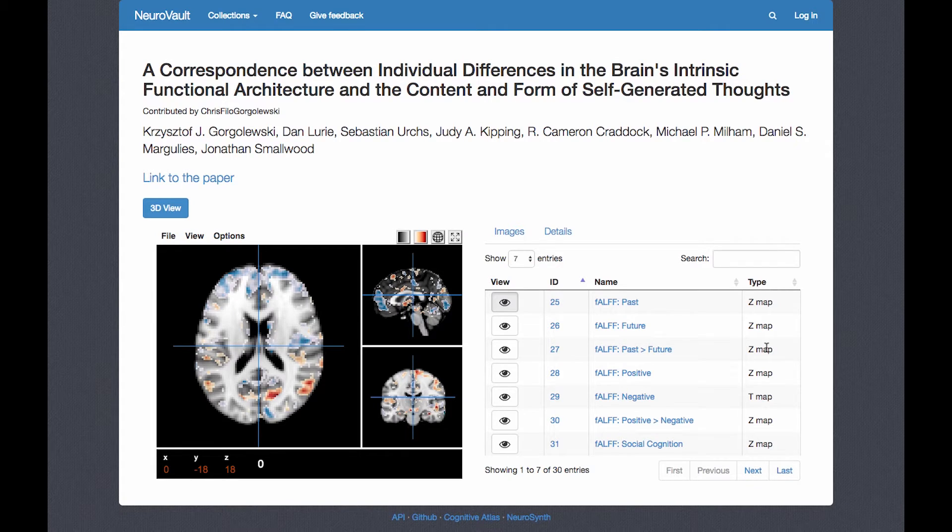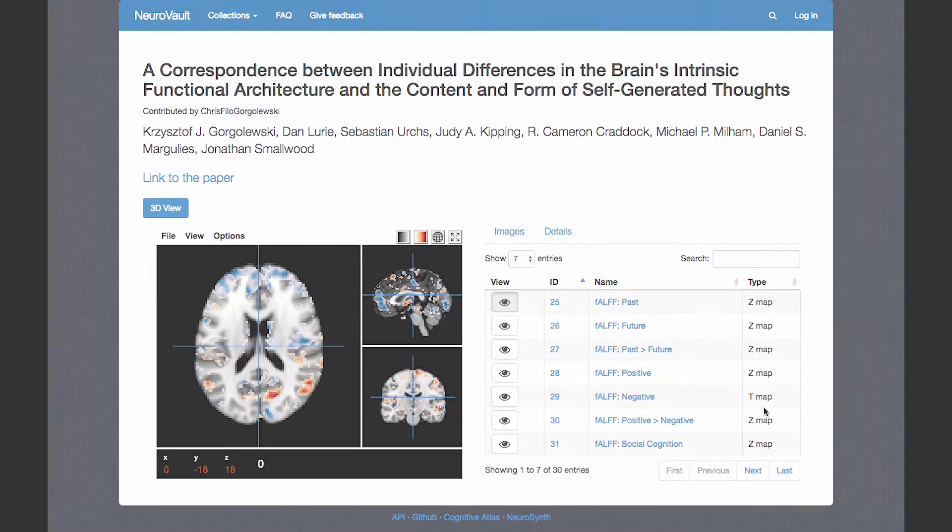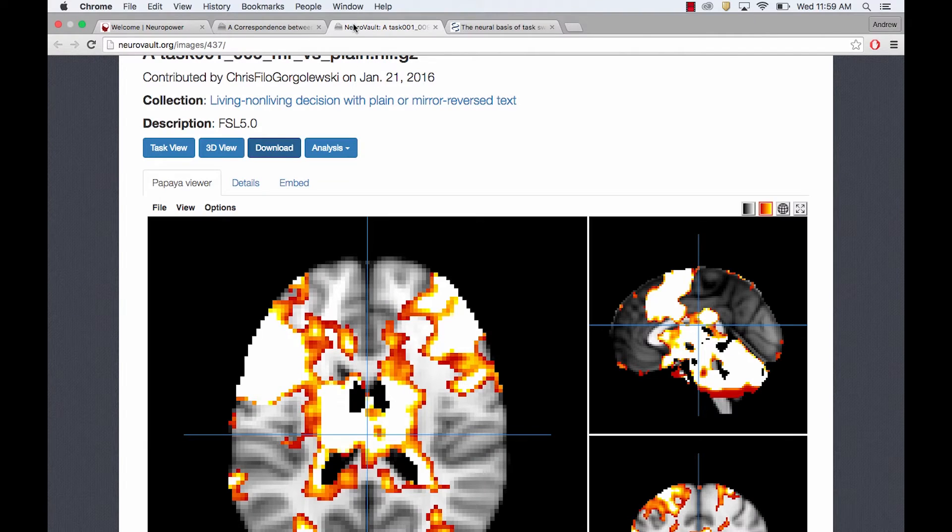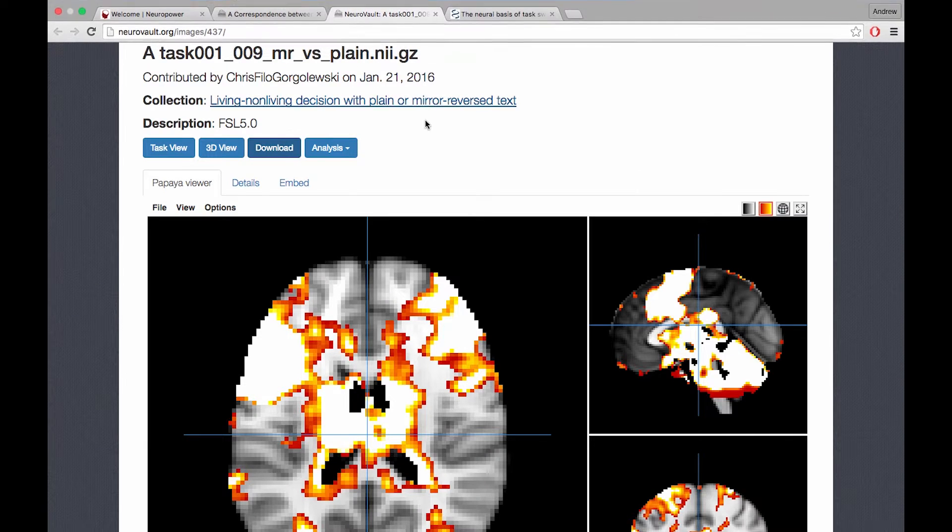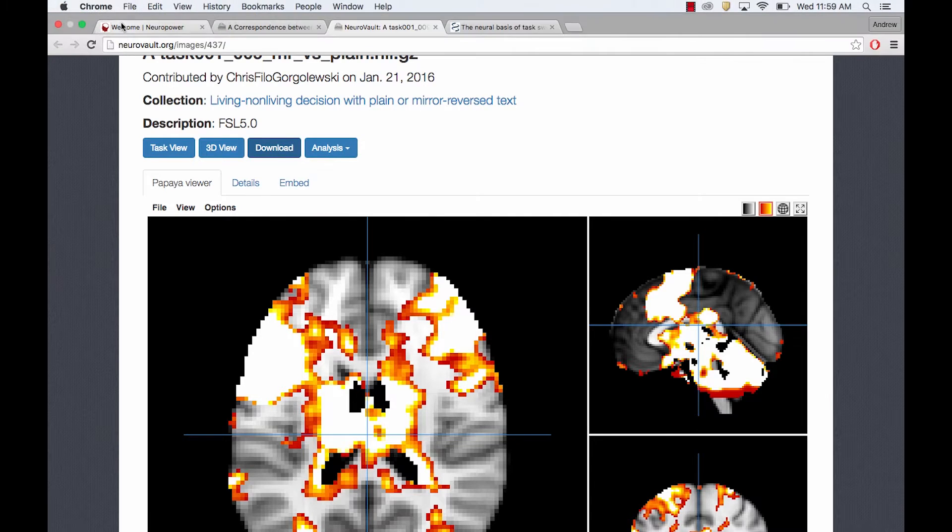Also note the type of map, either a Z-map or a T-map. For this tutorial, we'll be using a dataset from Russ Poldrax Group. Once you find something that you want to use, right-click on Download, click on Copy Link Address, and then go back to Neural Power Tools.